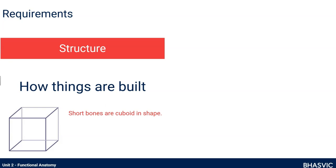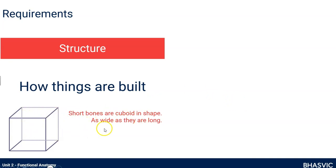Here we have short bones. Short bones are cuboid in shape — that means they look like a cube or a dice. They are as wide as they are long. These little phrases are great for exam questions; they're the sorts of descriptions we want you to be able to use. Short bones are structured like a cube, as wide as they are long.